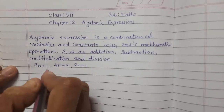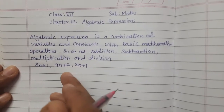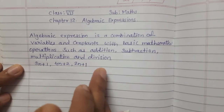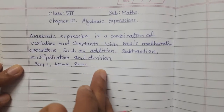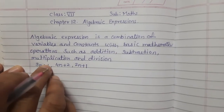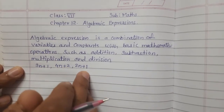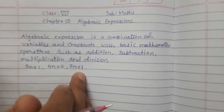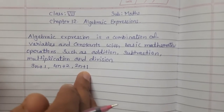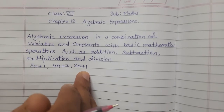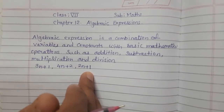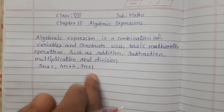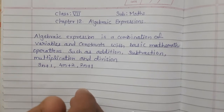If you observe these examples, n is the variable. These are all written in a form we know as an expression with a variable, or briefly as an Algebraic Expression.